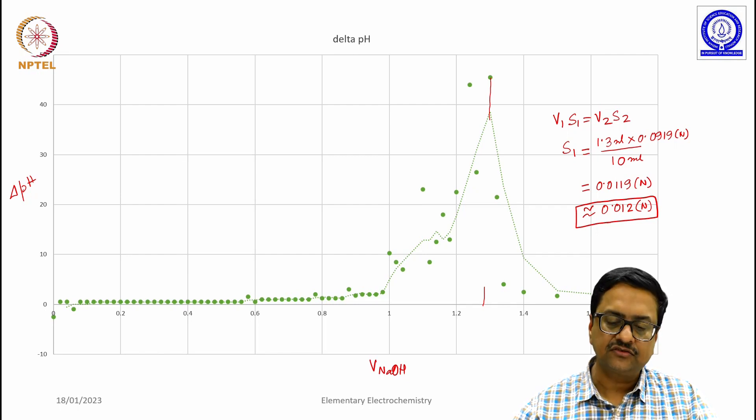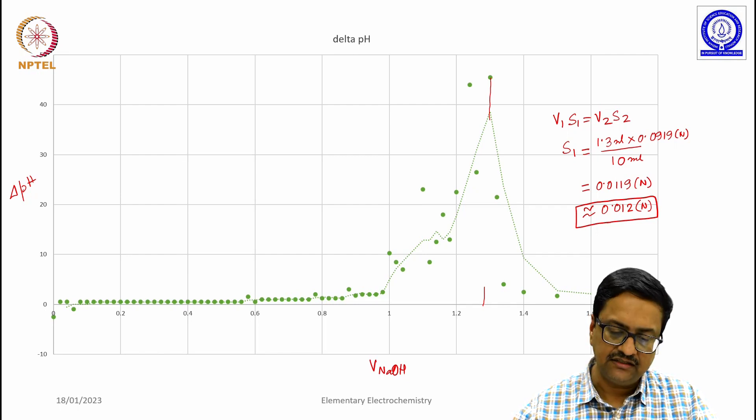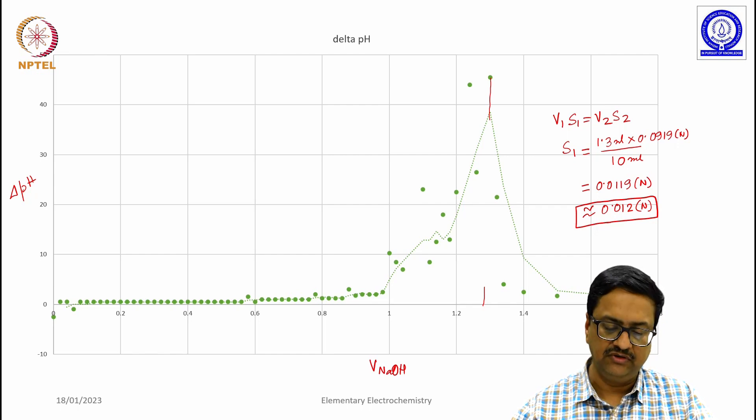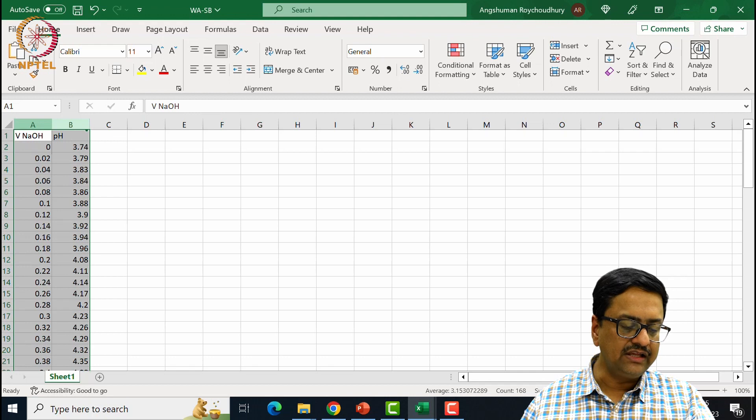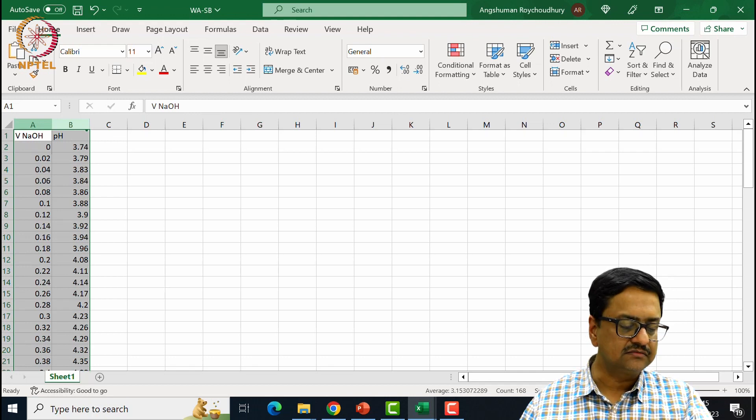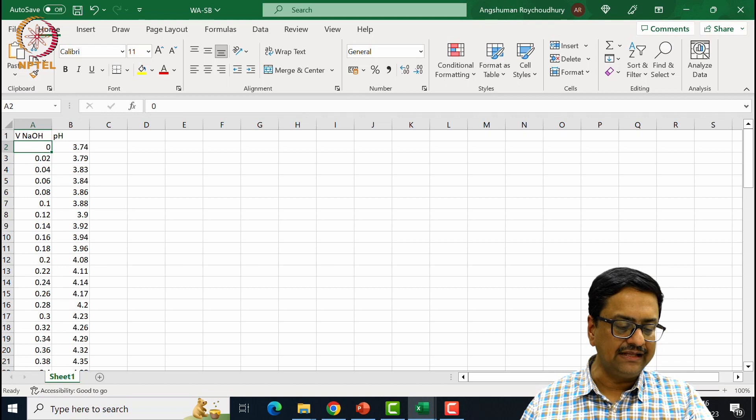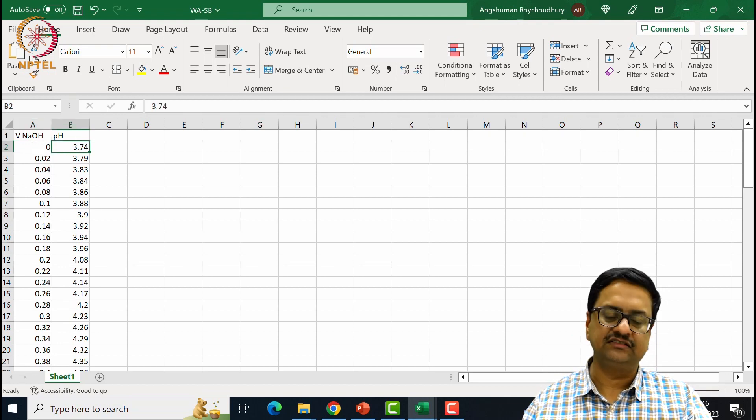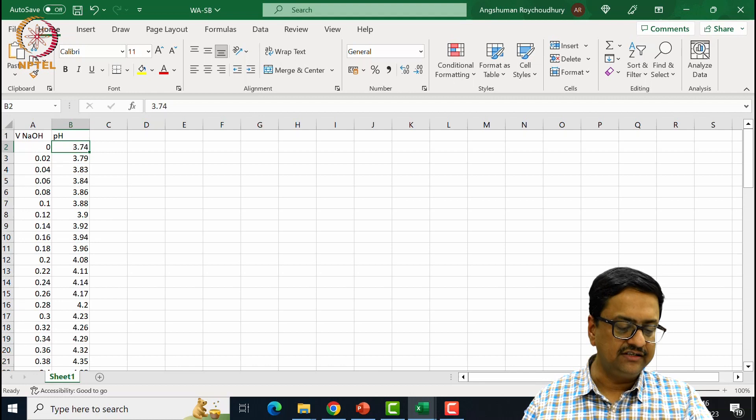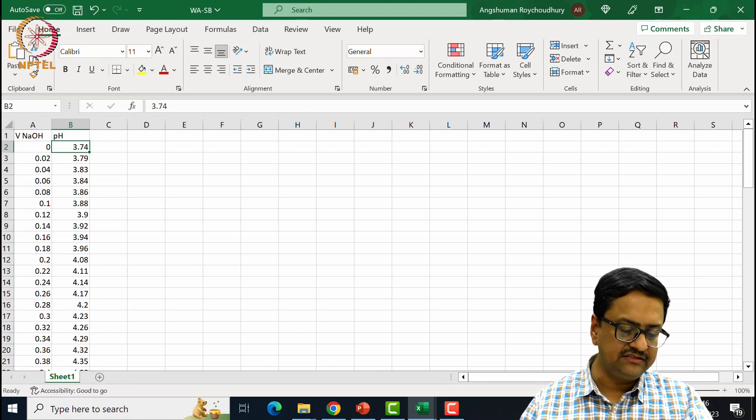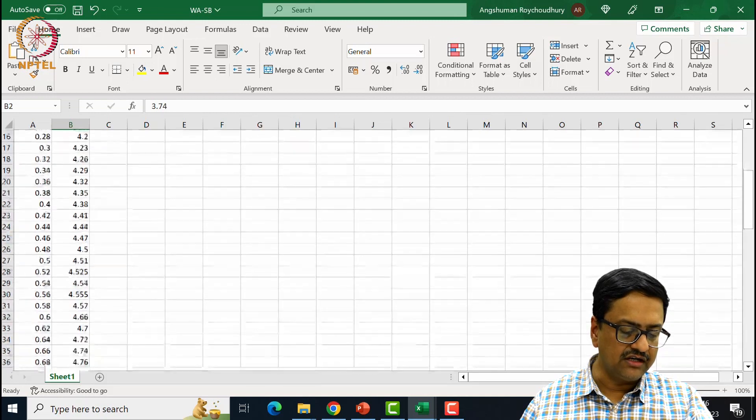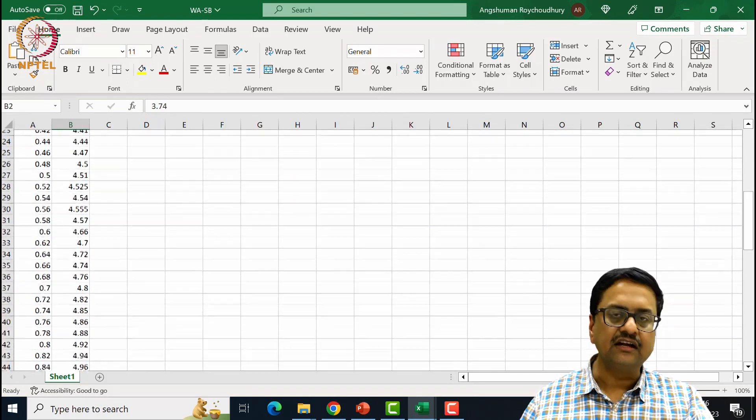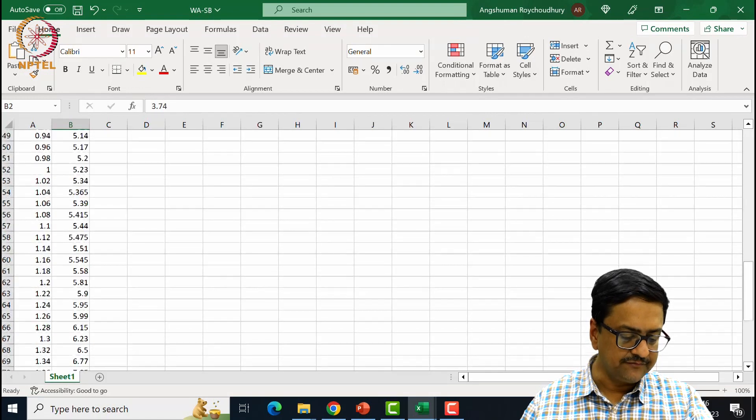Now I will just show you the readings and the results of the next experiment that we had done. This is the data table of weak acid versus strong base titration. If you remember with acetic acid, the starting reading was high 3.74 compared to that of HCl. And we continued adding small amounts and noted down those values, which are shown here on the screen that you can see.